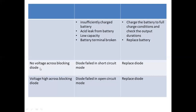From this condition, there is no voltage across the blocking diode. If the diode fails, it becomes short circuit mode. If the voltage is high, it becomes open circuit mode. In both cases — short circuit or open circuit failure — the diode must be replaced.